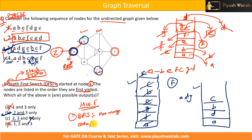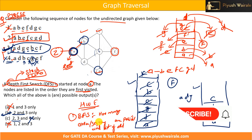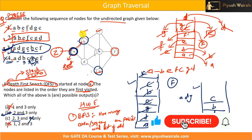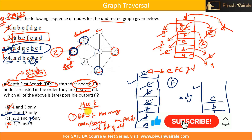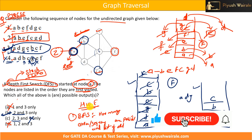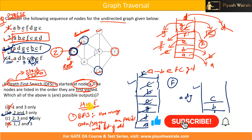For homework: use BFS instead of DFS on this same graph, starting from node A, and find all possible traversal sequences. List all of them. That's it for this video — I hope you understand the working of this example. Thank you.